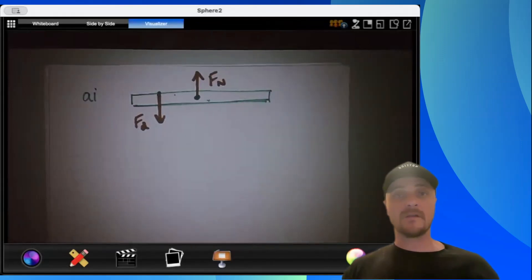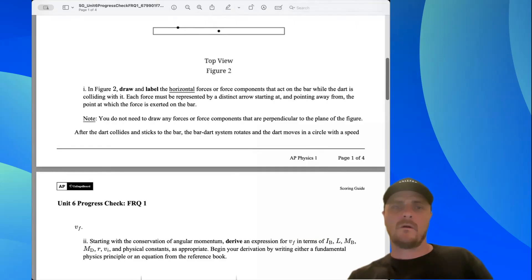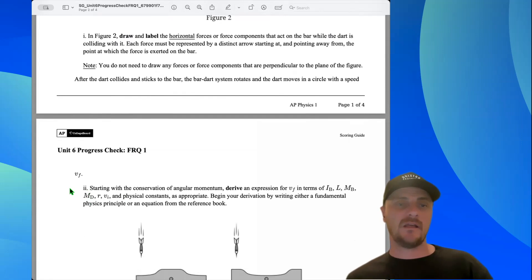A1 is done, let's move on to A2. After the dart collides and sticks to the bar, the bar-dart system rotates and the dart moves in a circle with a speed vf. In A2, starting with the conservation of angular momentum, derive an expression for vf in terms of ib, L, mb, md, r, vi, and physical constants as appropriate. Begin your derivation by writing either a fundamental physics principle or an equation from the reference book.